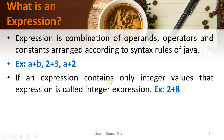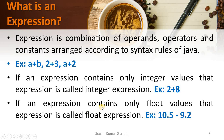If an expression contains only integer values, that expression is called an integer expression. For example, 2 + 8 — both operands are integer values, so this is called an integer expression. If an expression contains only float values, that expression is called a float expression. For example, 10.5 - 9.2 — these two are float values, so this expression is called a float expression.